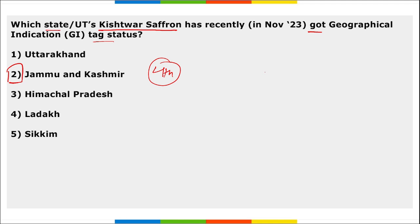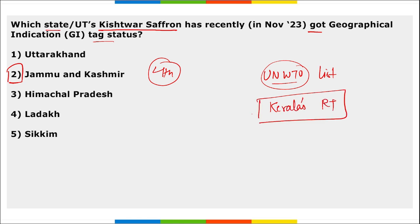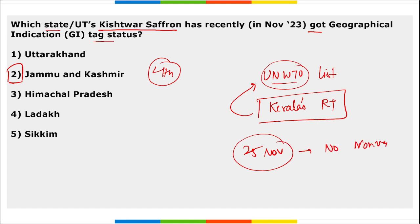Apart from this, which state's responsible tourism made it to the United Nations World Tourism Organization list? It is Kerala's responsible tourism — Kerala's responsible tourism recently made it to the UNWTO's list. Then, which state declared 25th of November as the 'no non-veg day'? It is Uttar Pradesh.